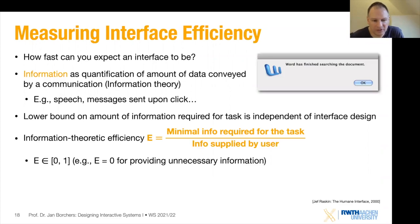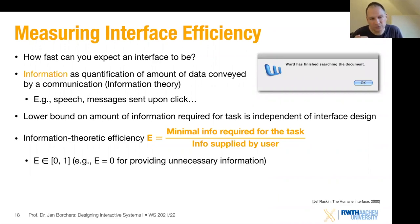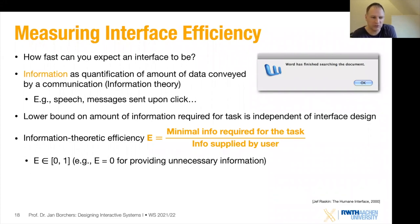So we can determine an information-theoretic efficiency E: the minimum information required divided by the actual information the user provides. E is a value between zero and one. If you're supplying a lot of information but very little is actually required for the task, E is very small. If you provide exactly as much information as the interface needs and nothing more, E equals one — you've reached the theoretical optimum. No interface could possibly be faster than that. An example where E equals zero is a dialog box with only an OK button — pressing it sends some information but makes no choice and doesn't influence what the system does. The interaction is unnecessary.